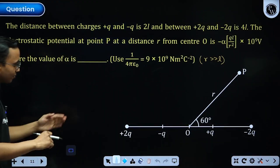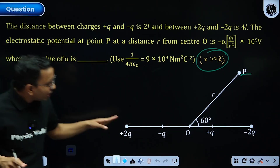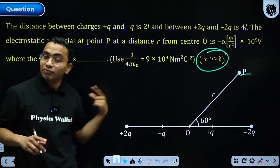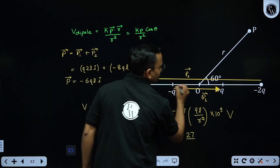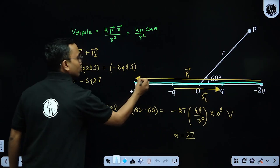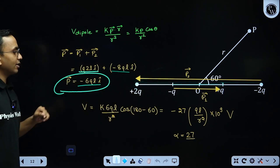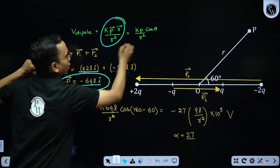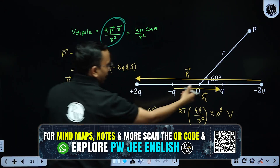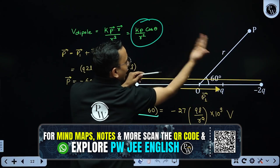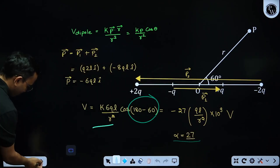Next question: four charges are arranged and we need the potential at point P, given R >> L. We treat the arrangement as two dipoles. The net dipole moment P1 + P2 comes out to be −6ql î. Using the formula V = Kp·r̂/r² = Kp cosθ/r², the angle between the net dipole and the position vector of P is 180° − 60° = 120°. Substituting, I get α = 27, so option 4.